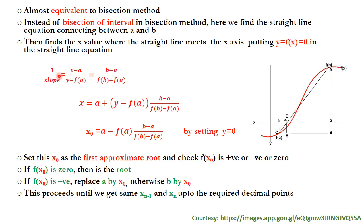The reciprocal of the slope of the straight line, using an arbitrary point (x, y), can be written as (x − a) / (y − f(a)), which equals (b − a) / (f(b) − f(a)). Solving for x, we get x = a + (y − f(a)) · (b − a) / (f(b) − f(a)). This is the equation for x derived from the straight line equation.